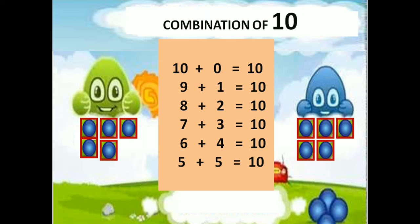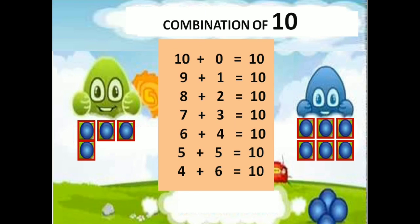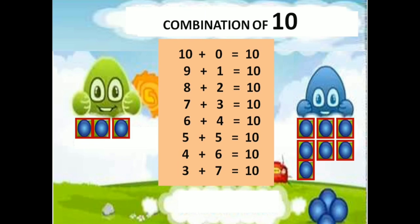Then, green doll having 5 balls, blue doll having 5 balls — 5 plus 5 equals 10. Green doll having 4 balls, blue doll having 6 balls — 4 plus 6 equals 10. Green doll having 3 balls, blue doll having 7 balls — 3 plus 7 equals 10.